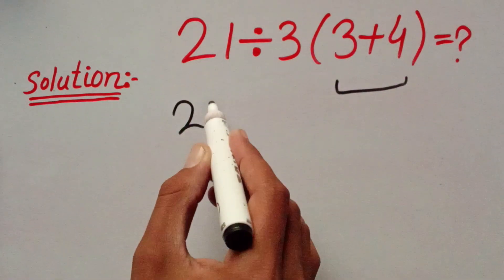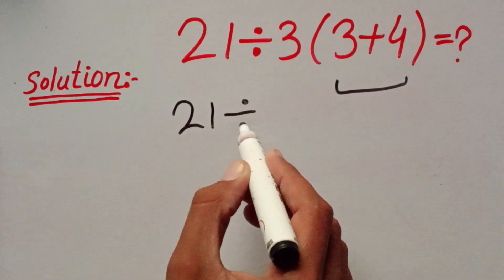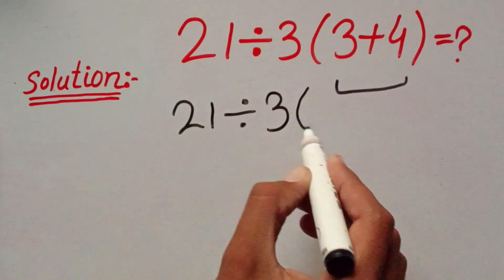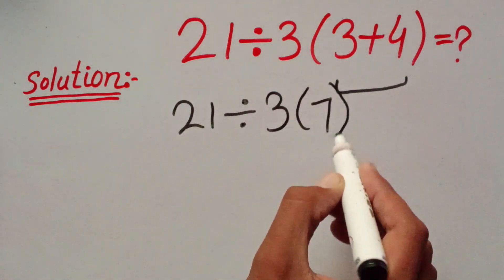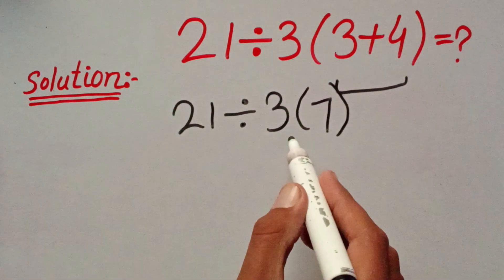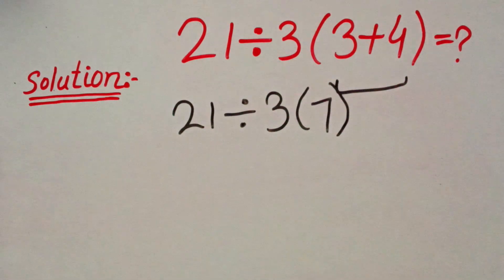So I can rewrite 21 divided by 3, 3 plus 4 equals 7. Now here, one multiplication and one division.